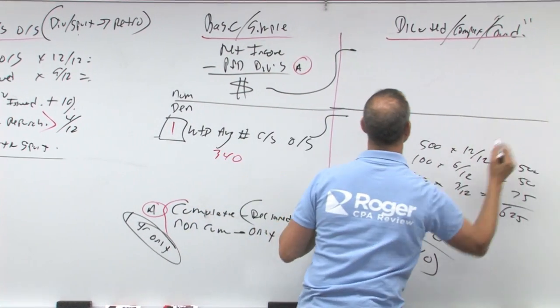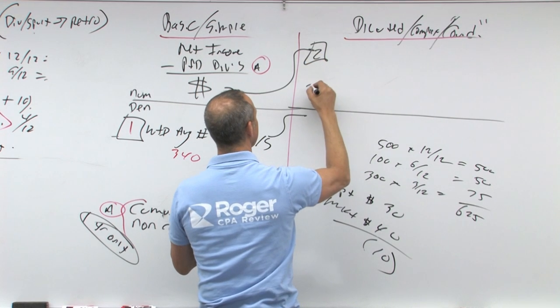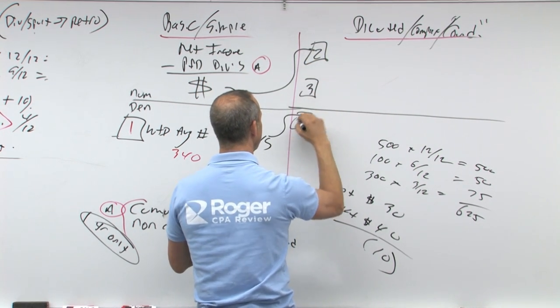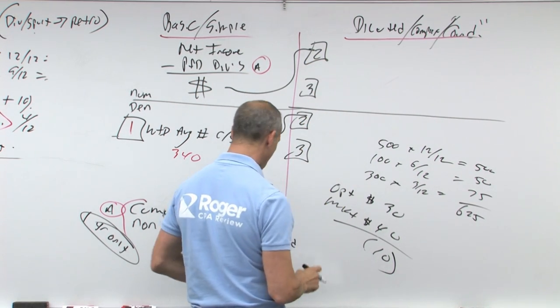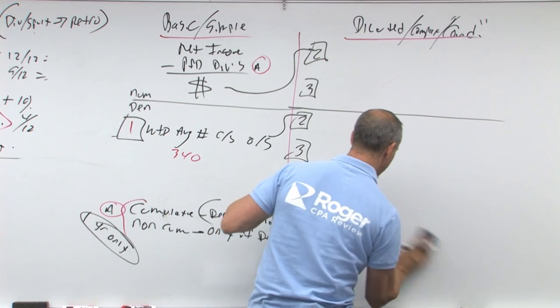Now we're going to take this number and bring it to here. We're going to take this and bring it to here and make some more adjustments. We're going to adjust for number two, number three. Now what do two and three mean?